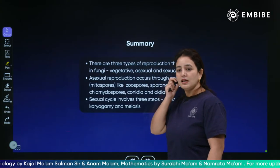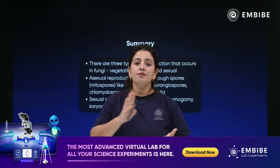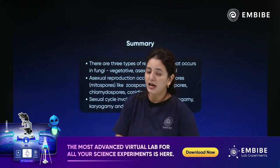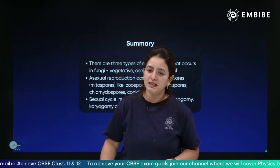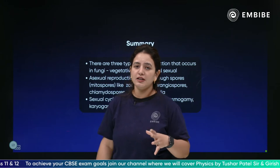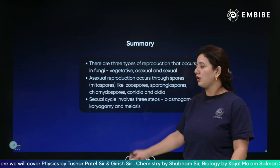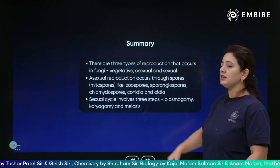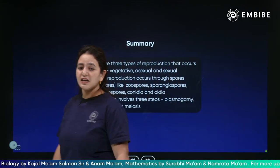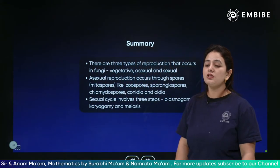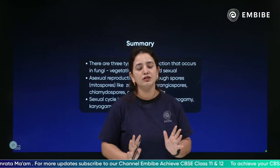This comes to an end of this particular session. We have discussed the sexual reproduction, vegetative reproduction, and asexual reproduction taking place in fungi, the different kinds of reproduction, what they form, what they produce and how they reproduce through various methods. The sexual reproduction is absent only in the Deuteromycetes and that is why they are called fungi imperfecti. The sexual cycle involves three steps: plasmagamy, karyogamy and meiosis. The asexual produces spores: zoospores, ascospores, basidiospores, conidiospores, chlamydospores. The vegetative reproduction requires budding, fragmentation and fission.